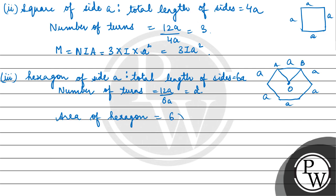12A upon 6A equals to 2. And if we talk about the area of hexagon, that will be equal to 6 into area of triangle OAB. Triangle area we calculated in the first part,